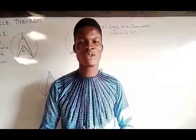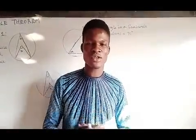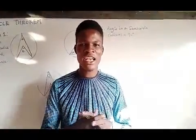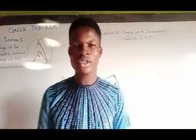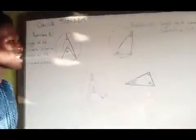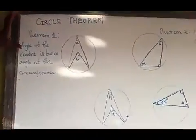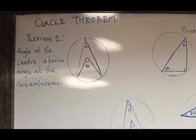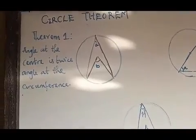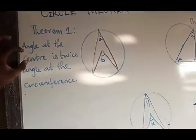Hi guys, welcome to Closer to the Mathematics class. Don't forget to subscribe, like, and share this video. Today we are starting a new series on circle theorems. The first theorem states that the angle at the center of a circle is twice the angle at the circumference.